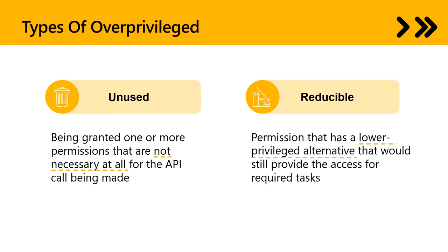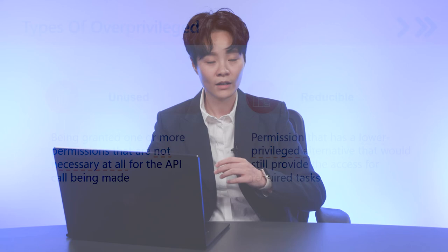The second scenario is the reducible permission. Like the keys example, this one is trickier and harder to discover. The definition is when your application has been granted a permission, but there is a lower-privilege alternative that would still provide the access needed for required tasks. For example, your calendar app has requested and been granted Files.ReadWrite.All, but it only needs to read files from the signed-in user's OneDrive and never needs to create new files or modify existing ones. In this case, your application only partially utilizes Files.ReadWrite.All, so you need to downgrade to Files.Read.All.